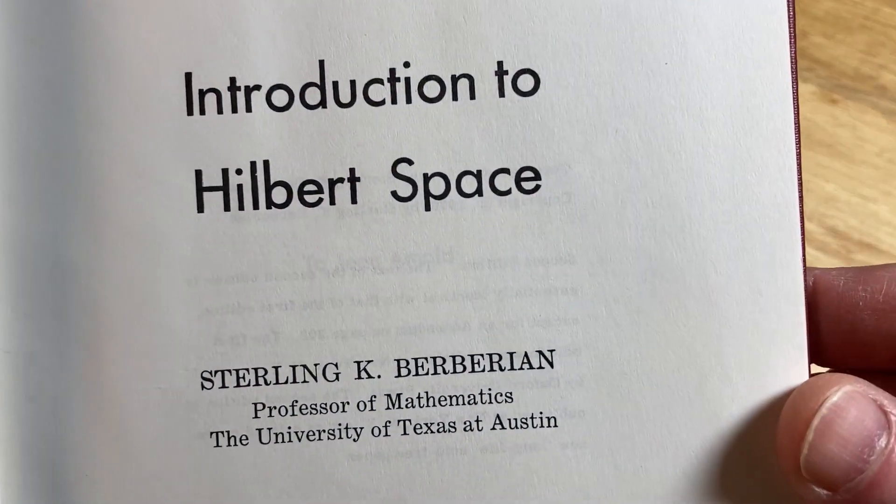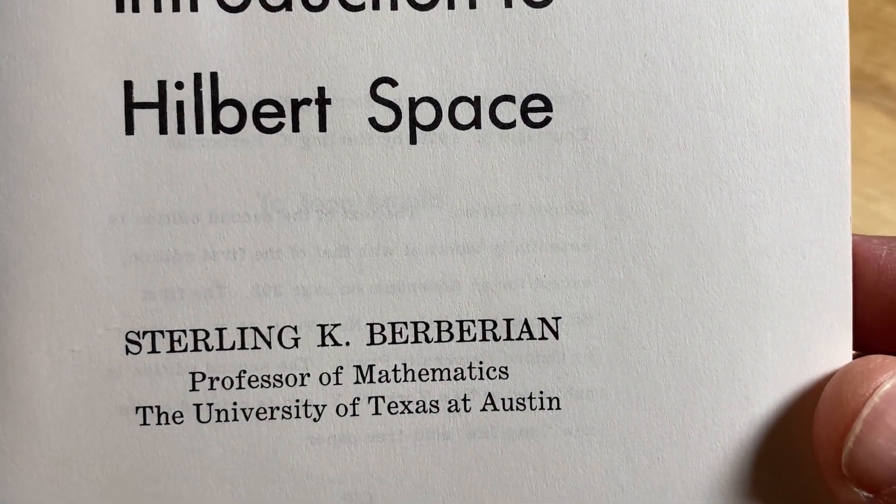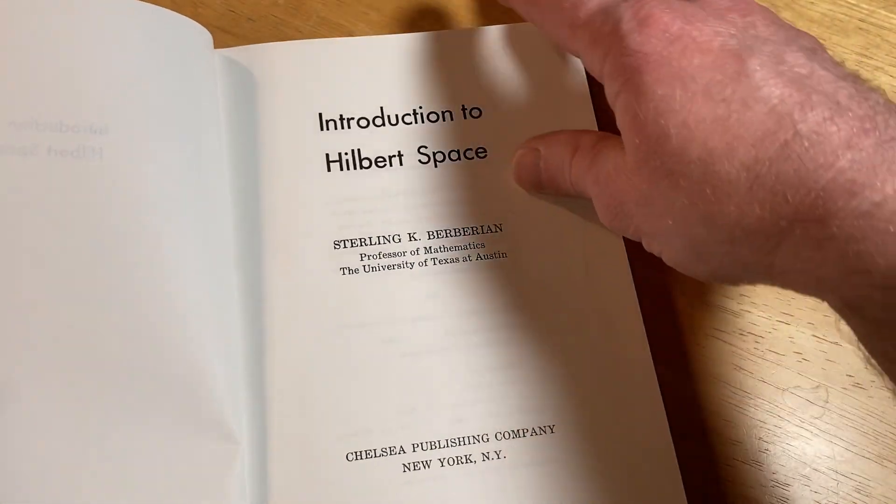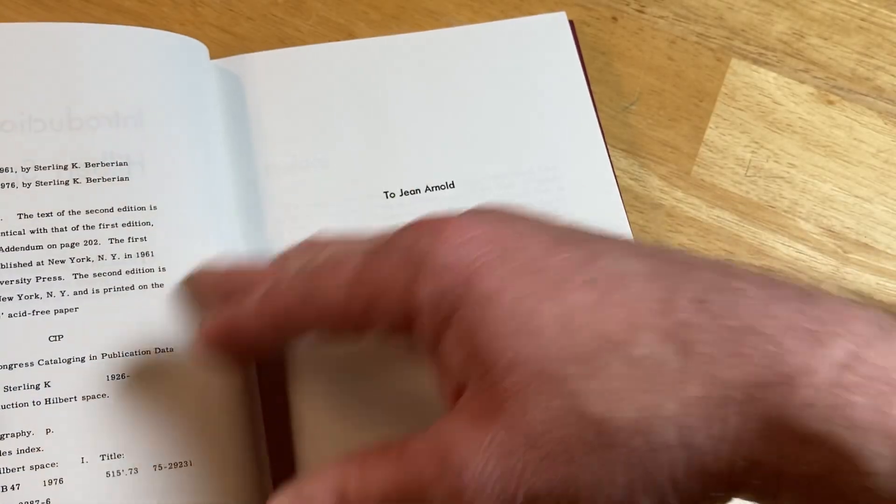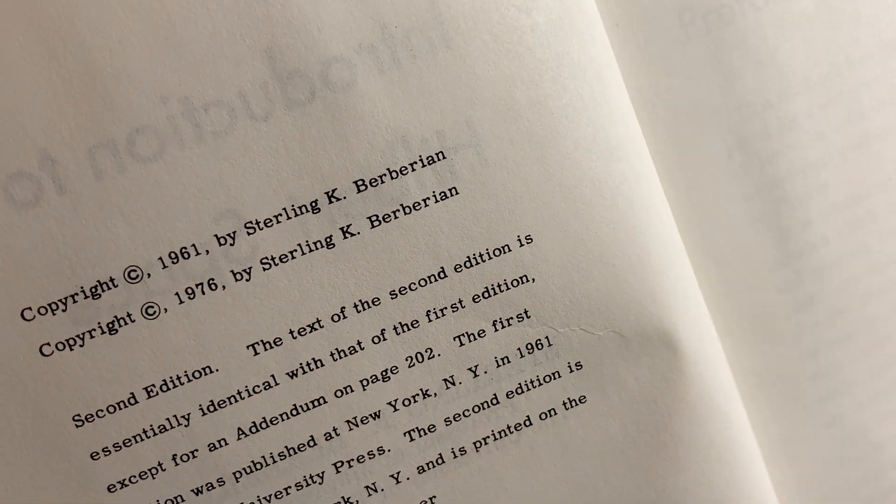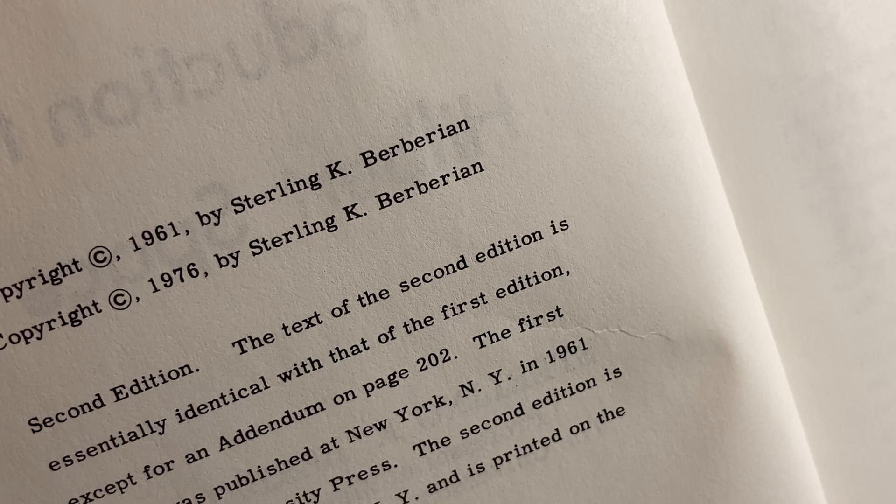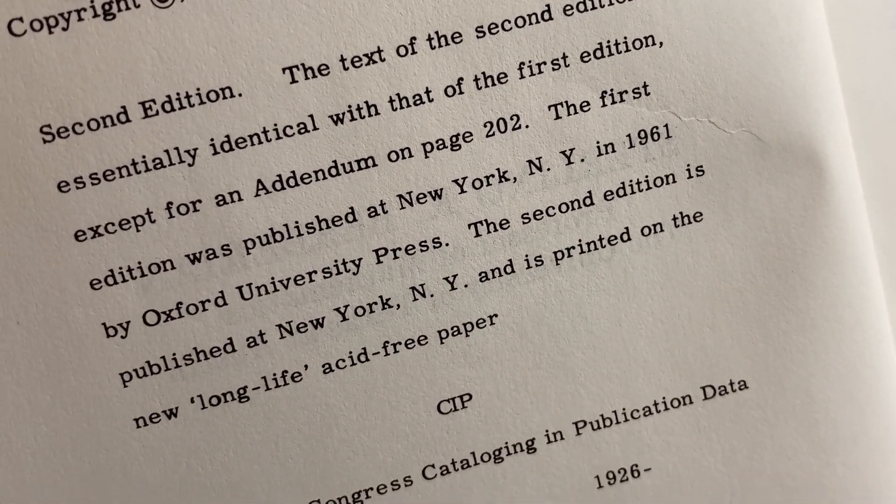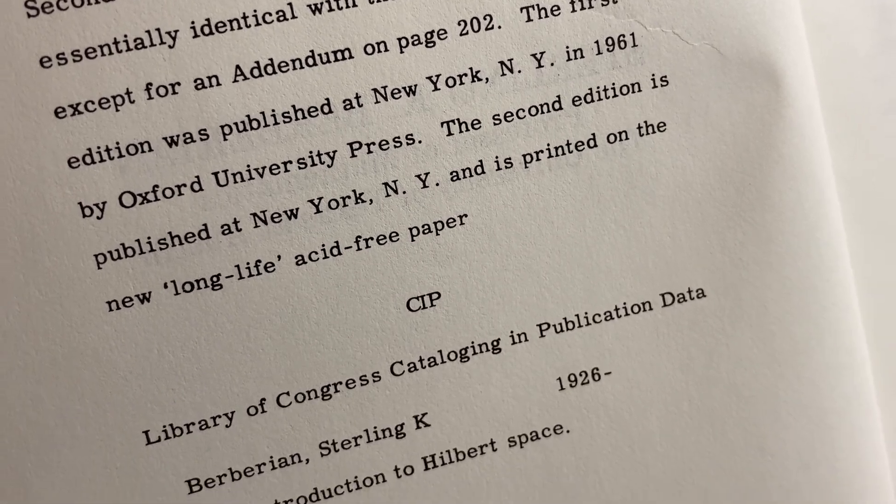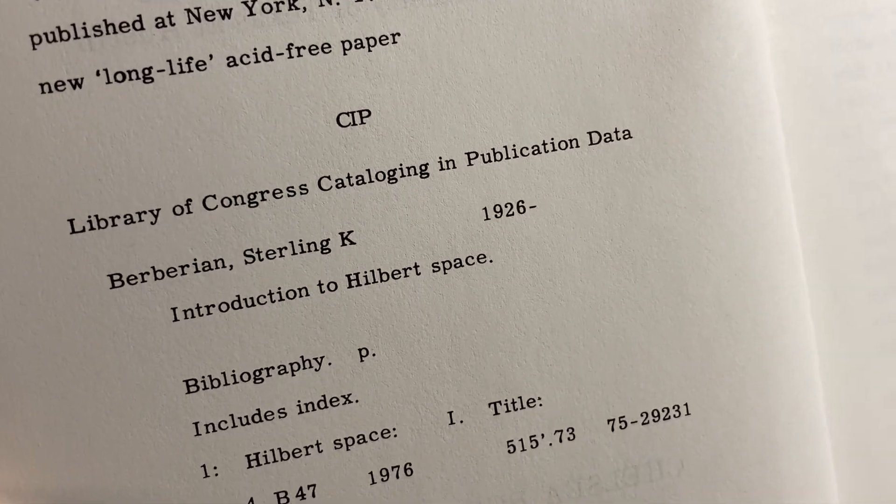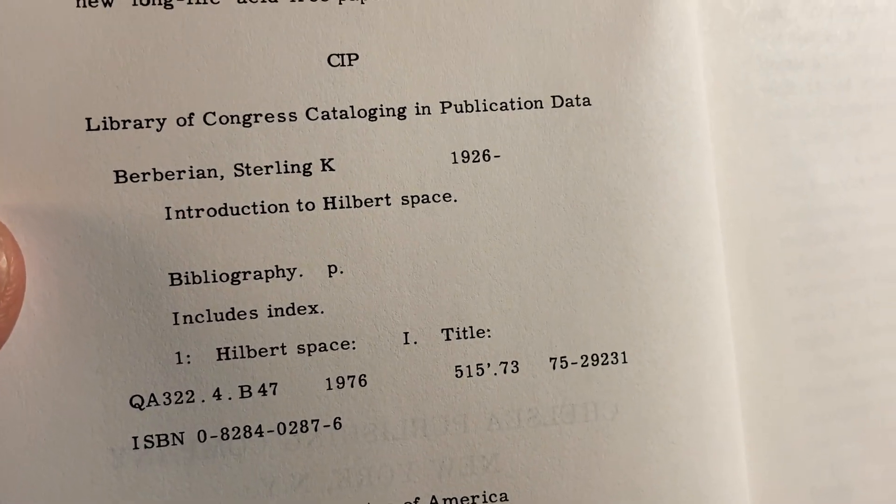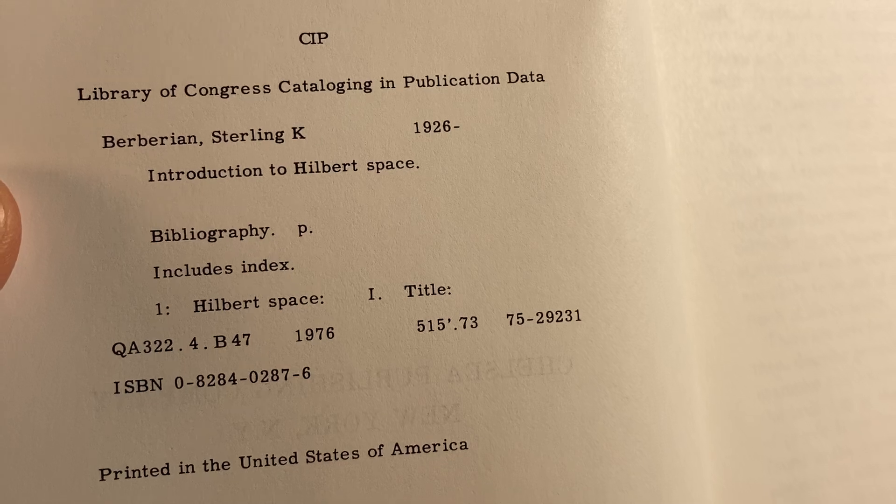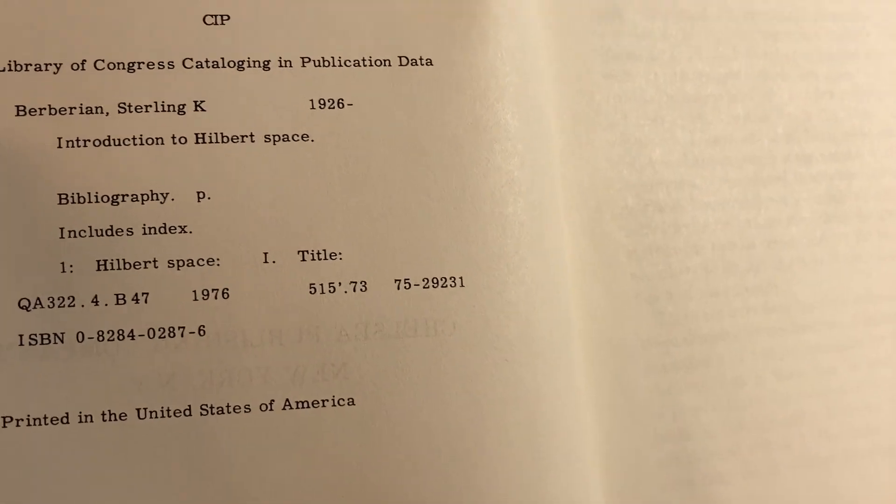Introduction to Hilbert Space. Sterling K. Berberian, Professor of Mathematics at the University of Texas at Austin. It's an old book. First published in 61, then in 76. This one's also printed on acid-free paper. He was born in 26. So I don't know if he's still alive today, but that would make him 98 years old, approximately, depending on his birthday.